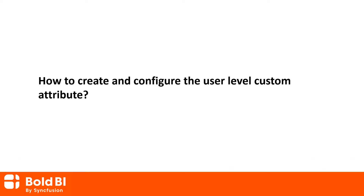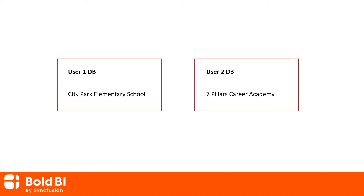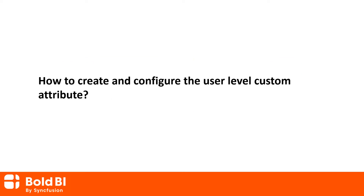Now let's see a demo with the user level attribute. If you have different databases for different users but with the same schema, you can change the connection string dynamically without recreating the dashboard for each user. I have a user one database with City Park Elementary School's data and a user two database with Seven Pillars Career Academies data. In this case, you can dynamically change data by adding an attribute at the user level. Let me show you how to create and configure a dynamic connection string via custom attribute at the user level.